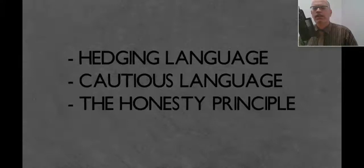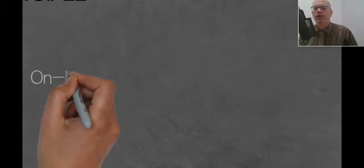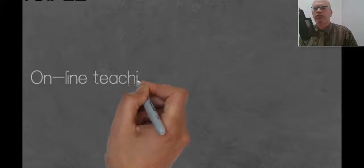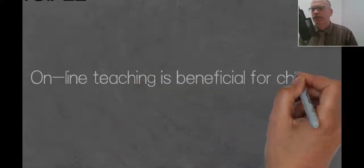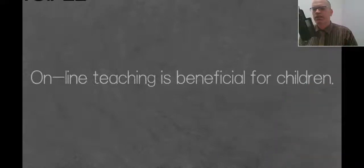So straight away now you see this sentence drawing up. Online teaching is beneficial for children. Now, that is not honest. Online teaching is beneficial for some children, not for all children, but this verb is is a 100% verb, and it means for all children. So we want to avoid that kind of language. We want to be cautious. We want to be honest with our language.